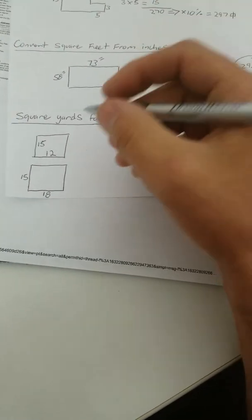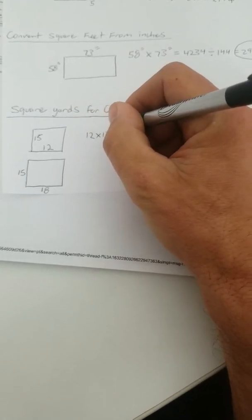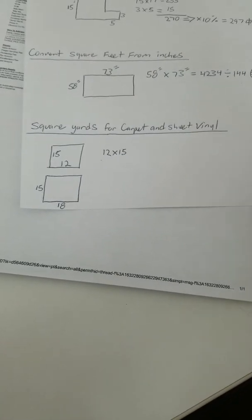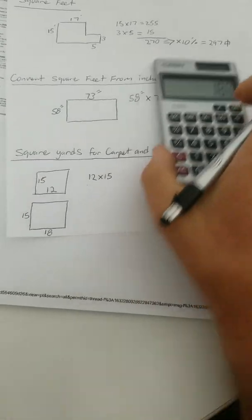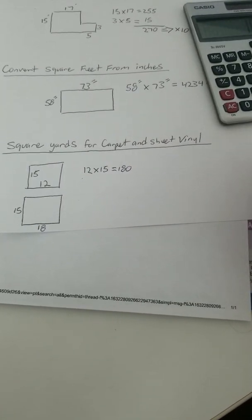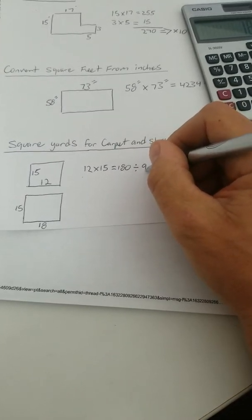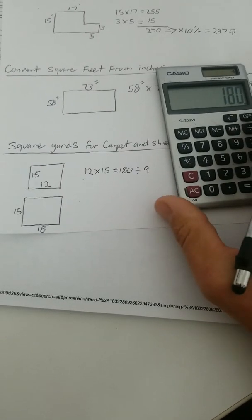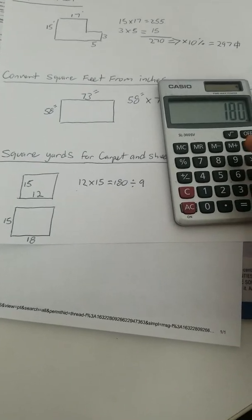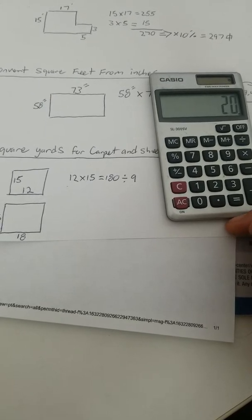we're going to take this room which is 12 by 15 which is going to be the easiest of anything. 12 by 15, so you're going to take your calculator and you're going to go 12 times 15. 12 times 15 and that equals 180. All right. So, to convert that into a yardage, we're going to simply divide that by 9 because there's 9 square feet in a square yard. So, we're going to go 180, divide that by 9. Simple as that,